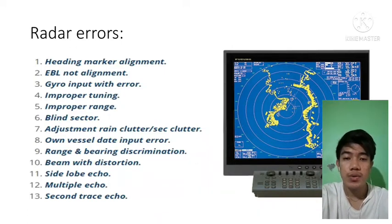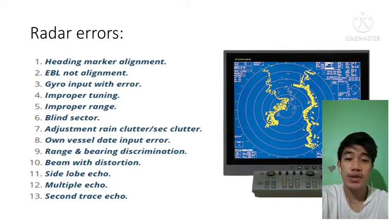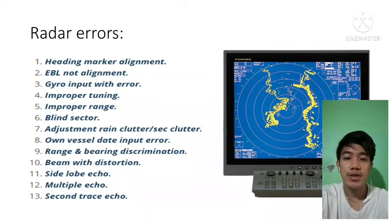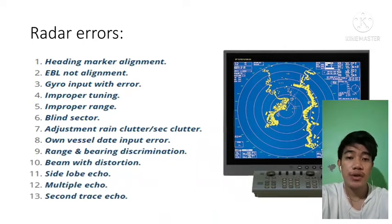Next we have the adjustment for rain clutter. The raindrops absorb and scatter radar signals, so less energy reaches the target and even less returns to the radar as an echo. Next is the own vessel data input error — inputting wrong data in the vessel will cause error.